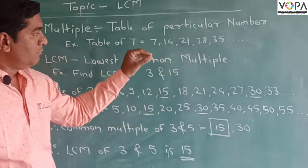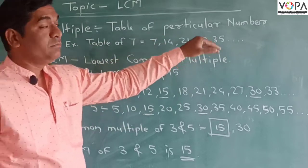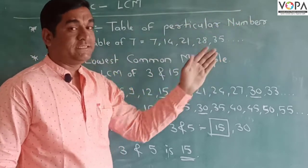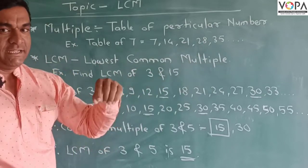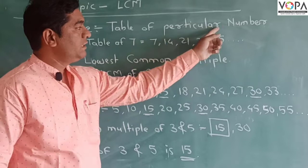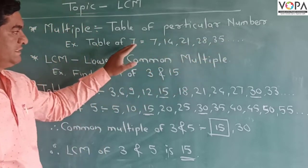So don't think that the table of 7 is at the end of 7×10=70. It will be upwards, 7×11=77, like this way it will continue. This number is called as multiples of 7.